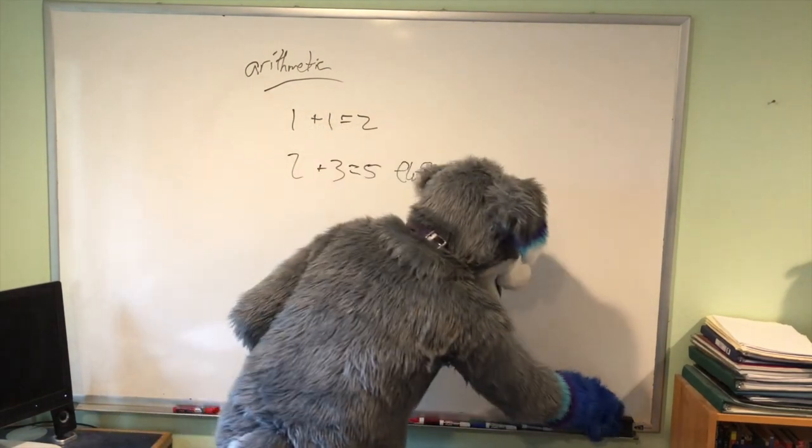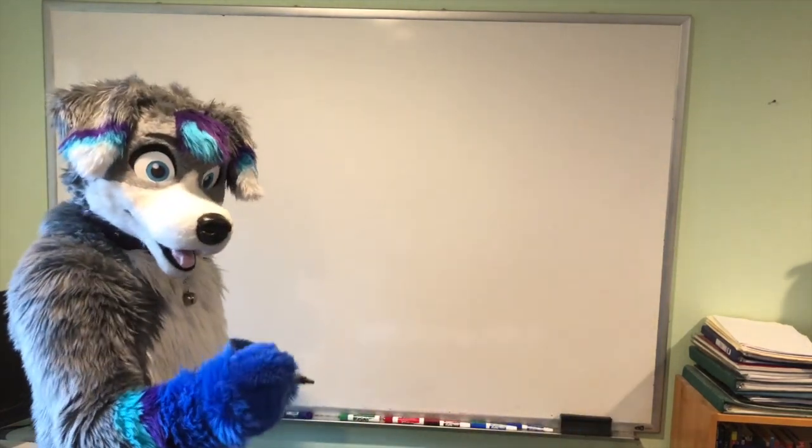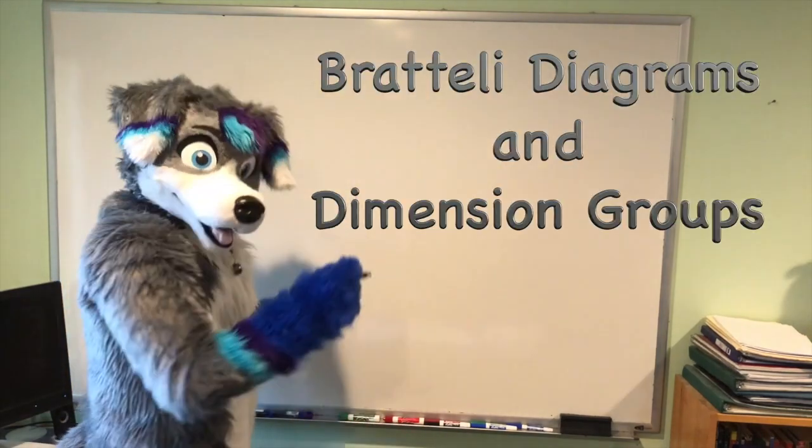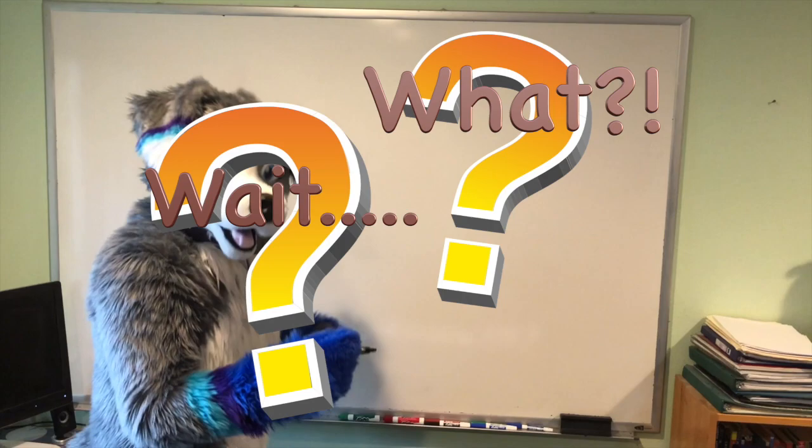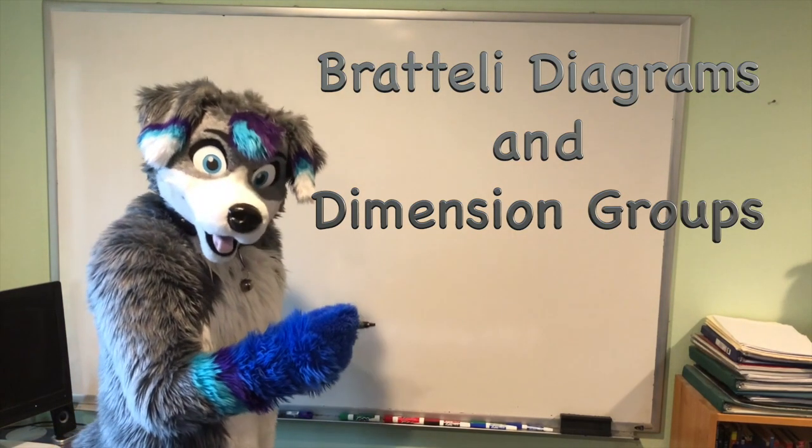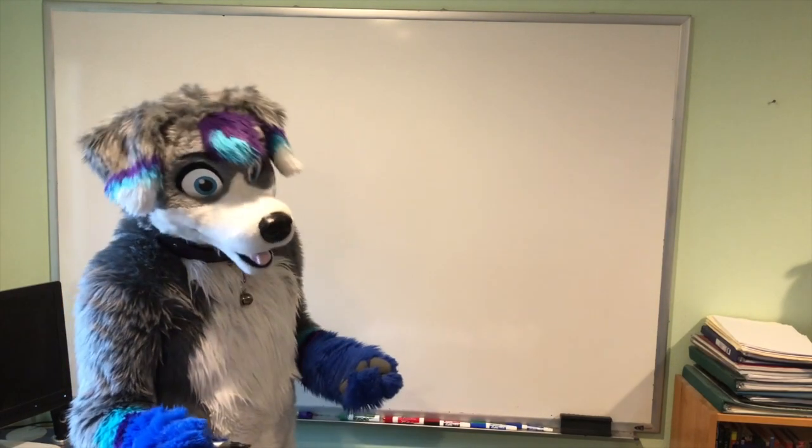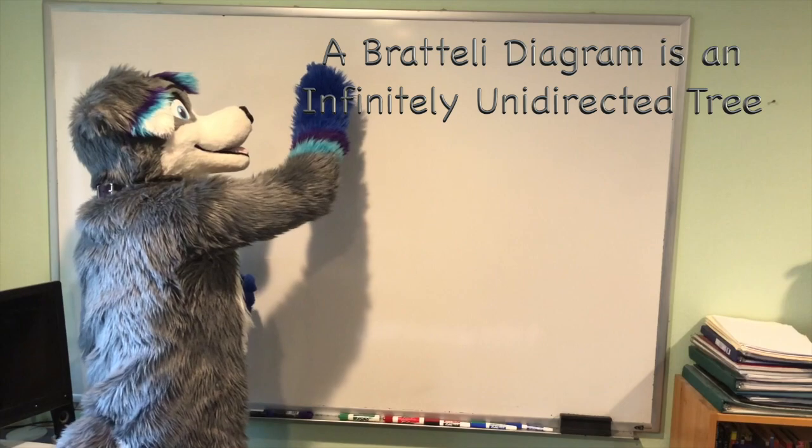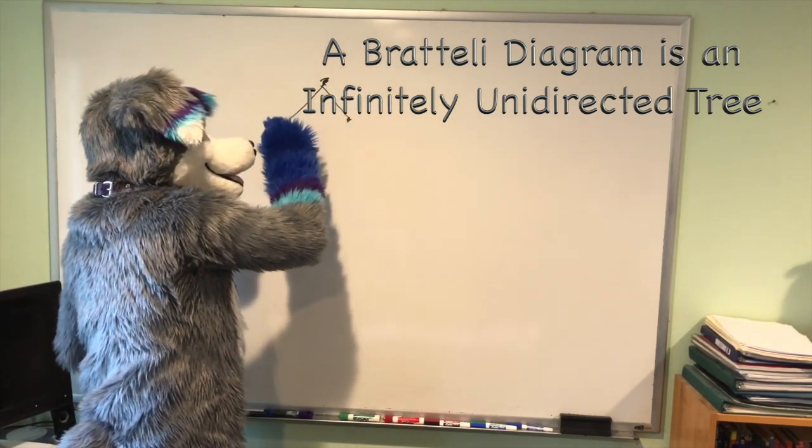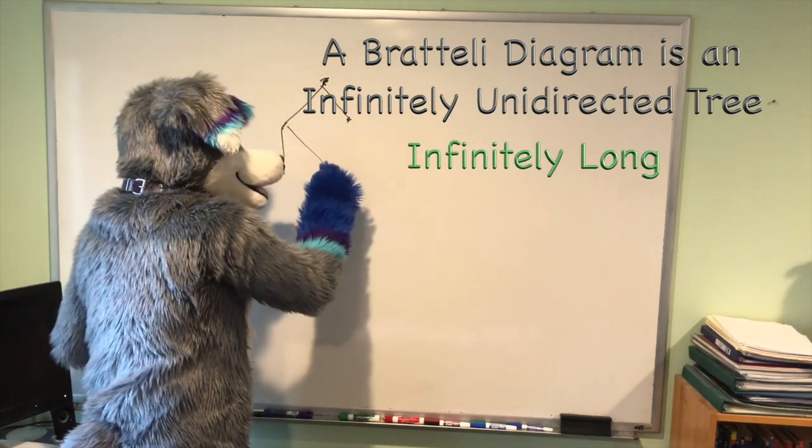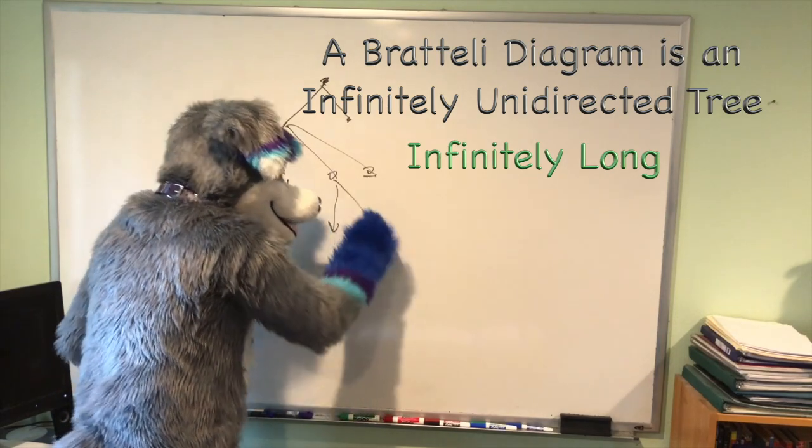Let's move on to another idea, where we can talk about Bratteli diagrams and dimension groups. So as you probably already know, a Bratteli diagram is an infinitely unidirected tree, and it's infinitely long, and stuff like that. And then you keep going down, down, down, and everything.